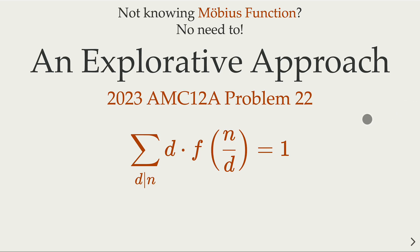We're going to talk about a number theory problem — Problem 22 of this year's AMC-12. This problem would be straightforward if you know Möbius' function, but of course not every high schooler knows about this. If you do, it will be easy. If you don't, no worries — we're going to guide you through the process. That's what competitive math is about: it's less meaningful to just use advanced knowledge.